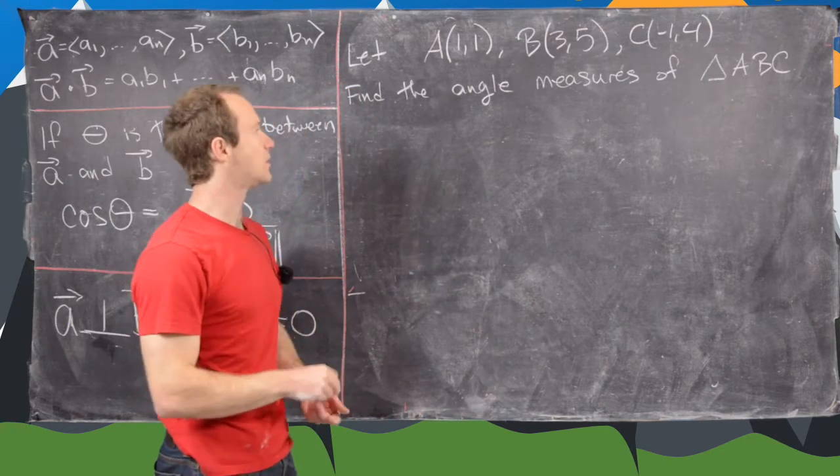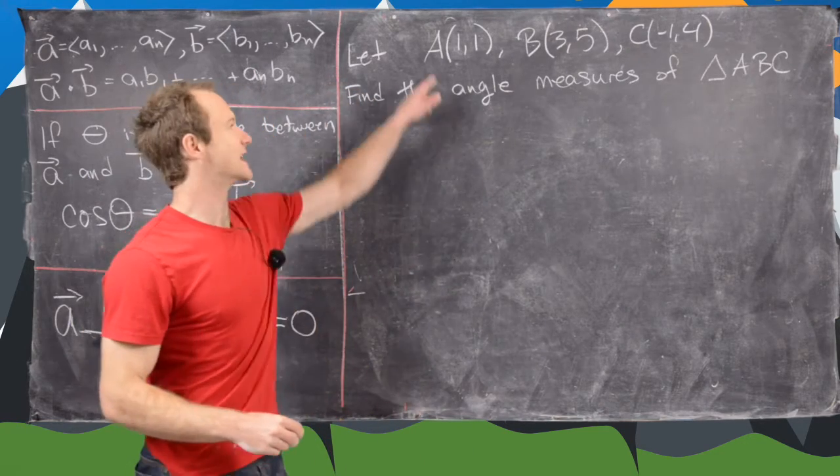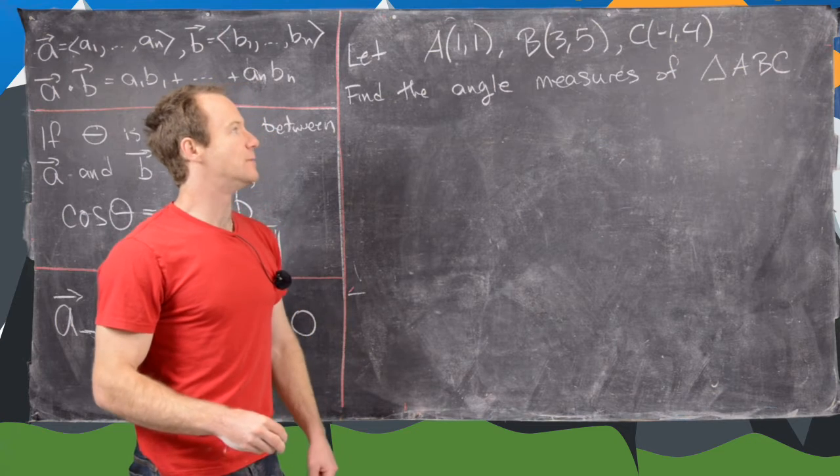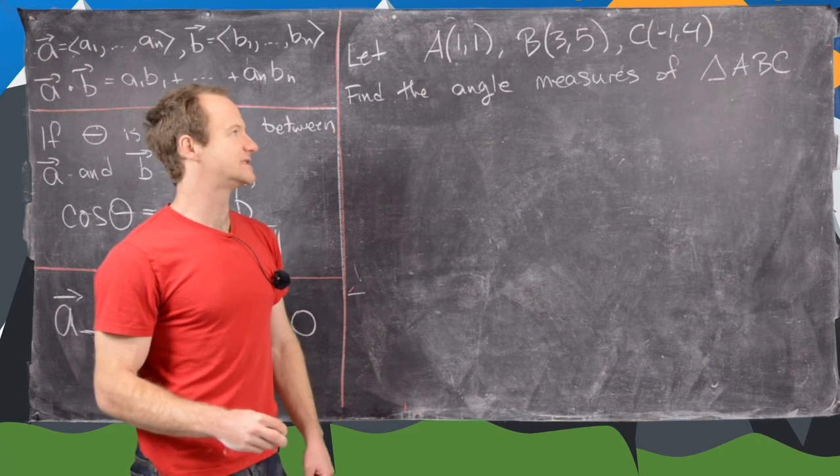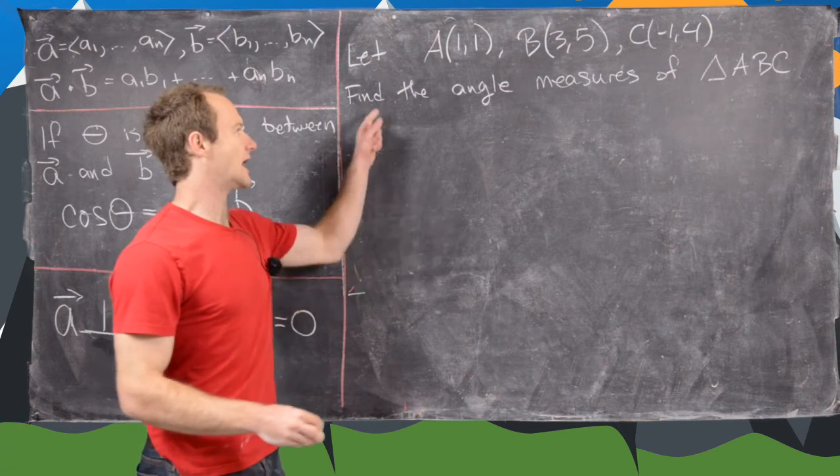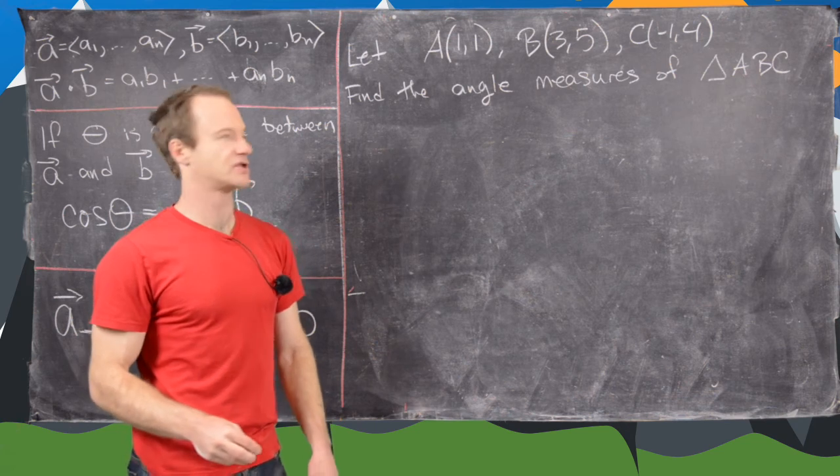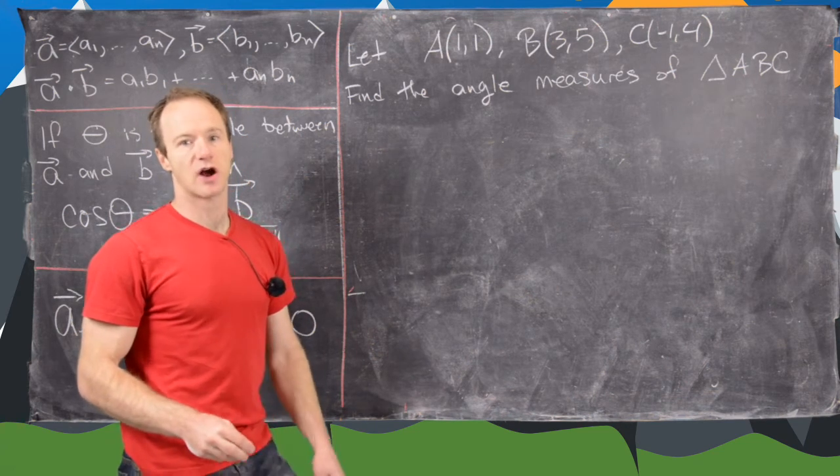So for our last example, we'll look at the following. Let's let A be the point 1, 1, B be 3, 5, and C be negative 1, 4. And our goal is to find the angle measures of the angles in triangle ABC.